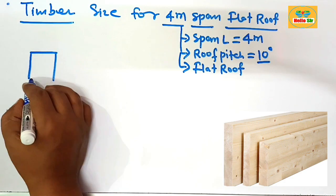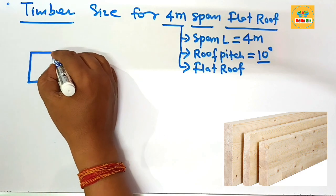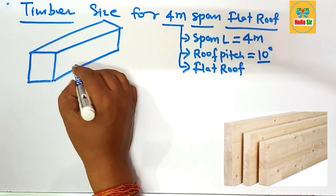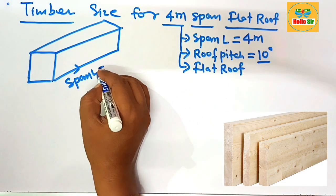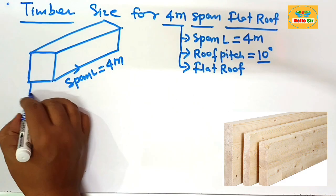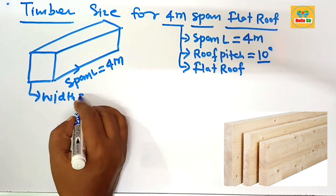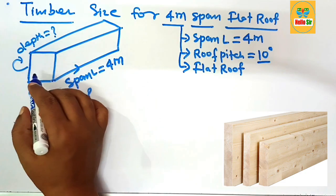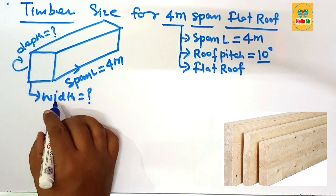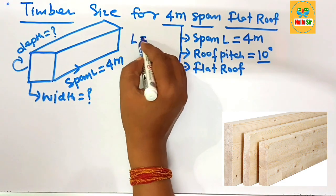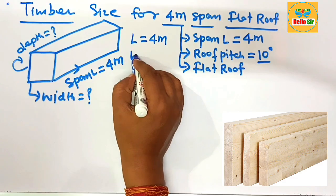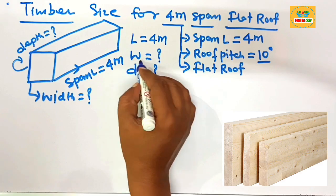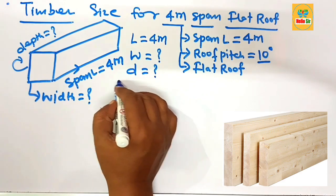First, we make a rough diagram to understand the dimensions for the roof joist. The span length given is about four meters. The timber size includes the width and depth of the joist. So the four meter length is given, and you have to find out the width section and the depth section of the joist.